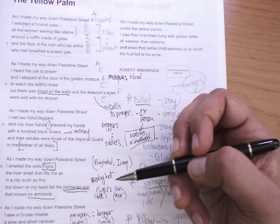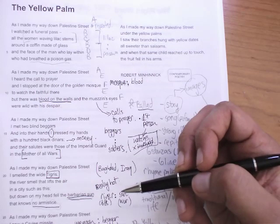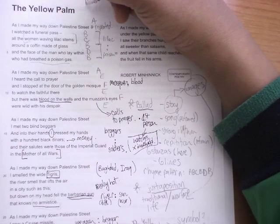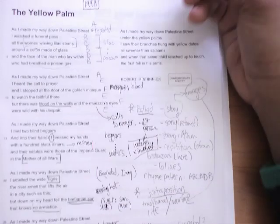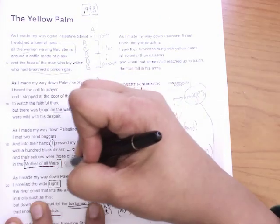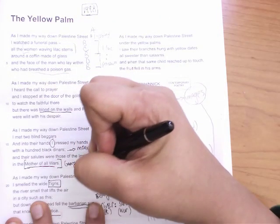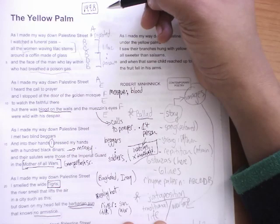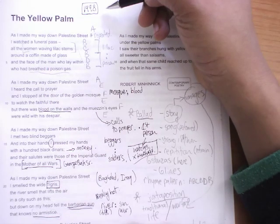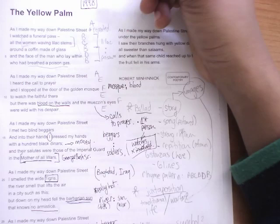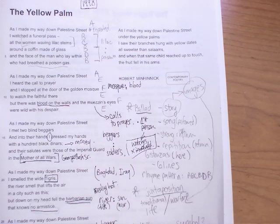This is indeed Baghdad where America and the UK invaded in 2003. But the context of this poem is actually 1998 where both the US and the UK were still, this was in the wake of the first Gulf War called by George Bush Senior, I believe, ironically, the mother of all wars.